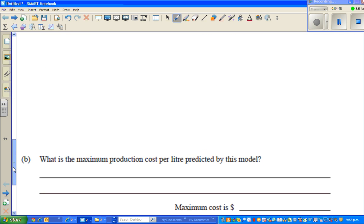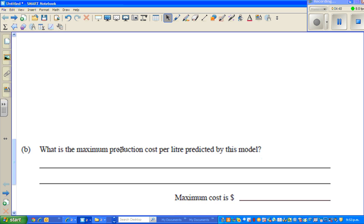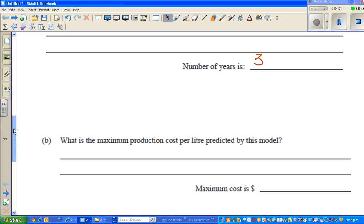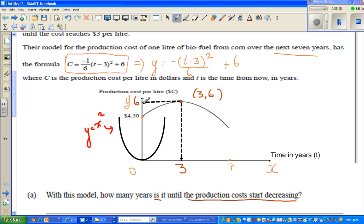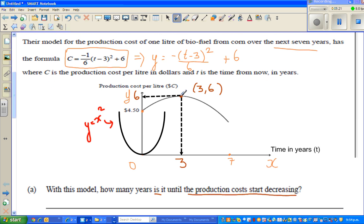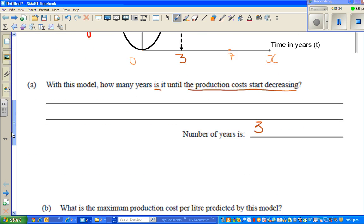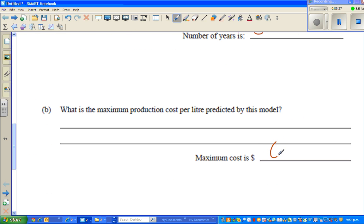Now what's the next question? What is the maximum production cost per liter predicted by the model? So what they're saying is, this model, what would be the maximum cost? So the maximum cost, this is the cost axis and this is the time axis. So I think you can see very clearly the maximum cost that it reaches, it can reach is 6 dollars. Because that's the vertex and that's the maximum. So here the answer would be 6 dollars.